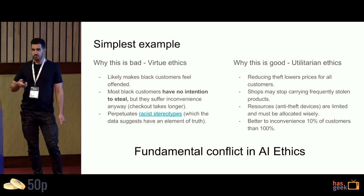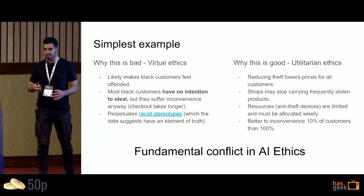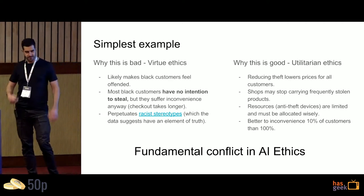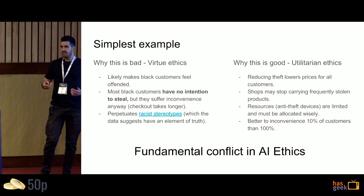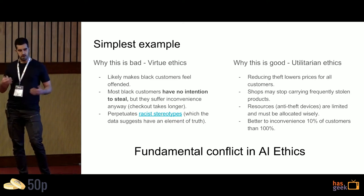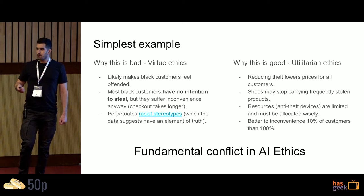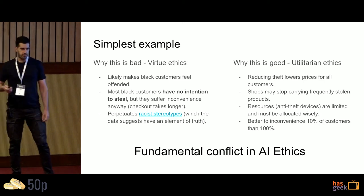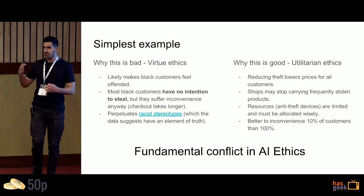Another thing a store might do is stop carrying items that are stolen a lot, which can also be very bad. My ex-girlfriend, born in Mozambique but living in Pune, asks me every time I come from the US to bring shampoo for black people because she can't buy it in Pune. If the store stops carrying the products because they're stolen a lot, that's also bad. These anti-theft devices are also limited — you could put them on everything, but then you're inconveniencing 100% of people. This example illustrates the fundamental takeaway: there are many relevant ethical principles here, and you cannot actually satisfy all of them. In most cases, there's no way to simultaneously be utilitarian, avoid stereotypes, and treat every group and every individual fairly.